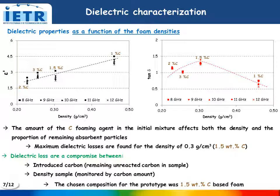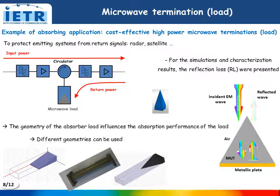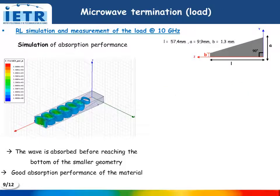The chosen composition for the prototype was 1.5% of carbon. Here I show an example of application of these absorbers: a cost-effective high-power microwave termination to protect emitting systems from return signals. The simulation of absorption performance of this load shows that the wave is absorbed before reaching the bottom of the geometry, which confirms the good absorption performance of our material.